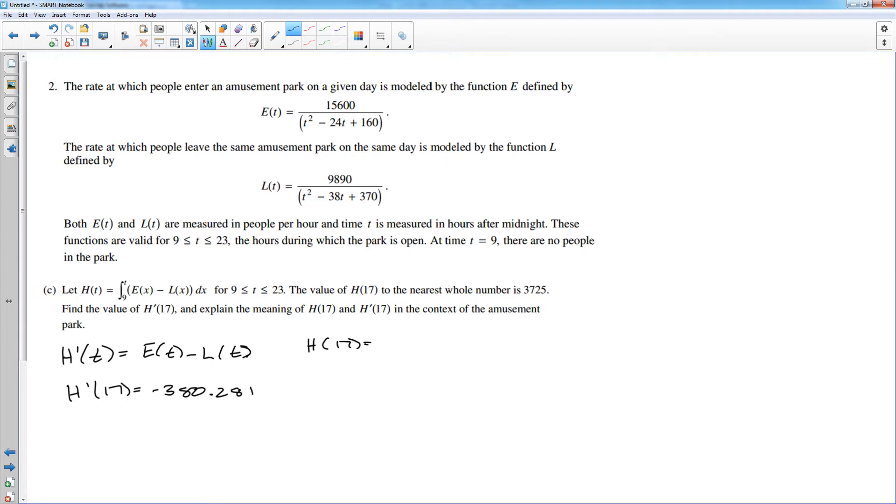And then it asks you to explain the meaning of those two values. Well, H of 17 was 3725. They just told you that. And H is the actual number of people in the park. So that's the number of people in the park at time T equals 17. H prime of 17, and you have to, when you explain this, you have to be specific to the problem. You cannot simply say H prime of 17 is the slope of H at 17. That doesn't really tell you anything about the context of the problem. H is the number of people in the park. So H prime is the rate of change of the number of people in the park. So if the rate of change is negative, that means at this point in time, the number of people in the park is decreasing. So you could say people are leaving the park at a specific rate. You could say the rate of change of the number of people in the park is negative 380.